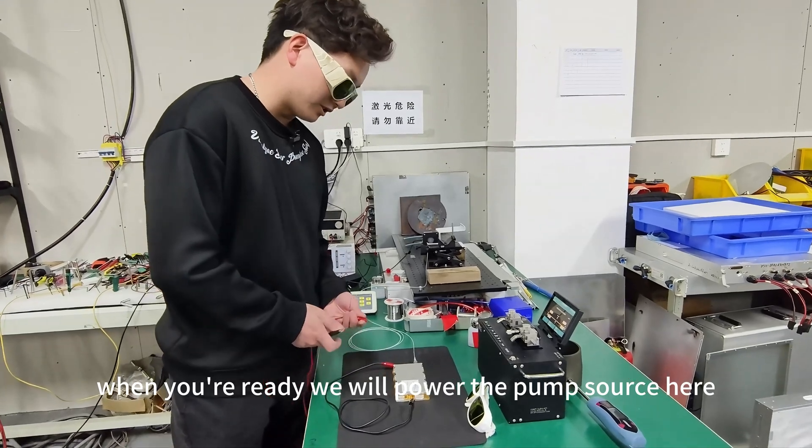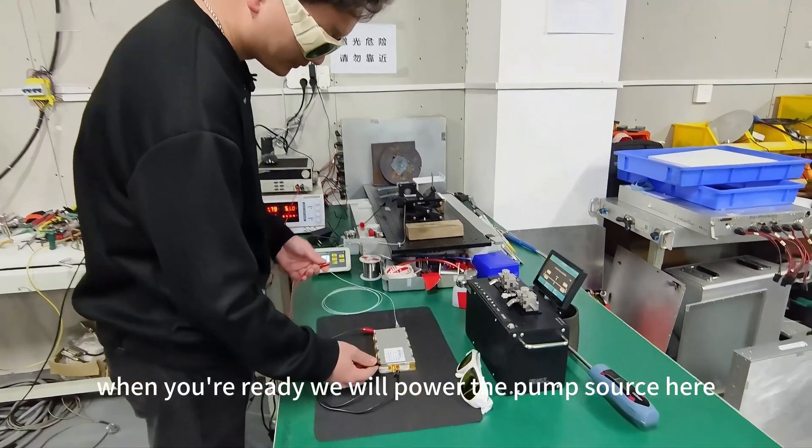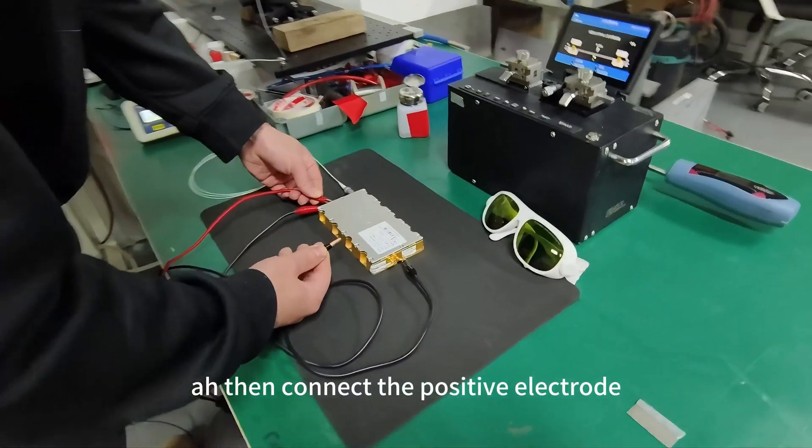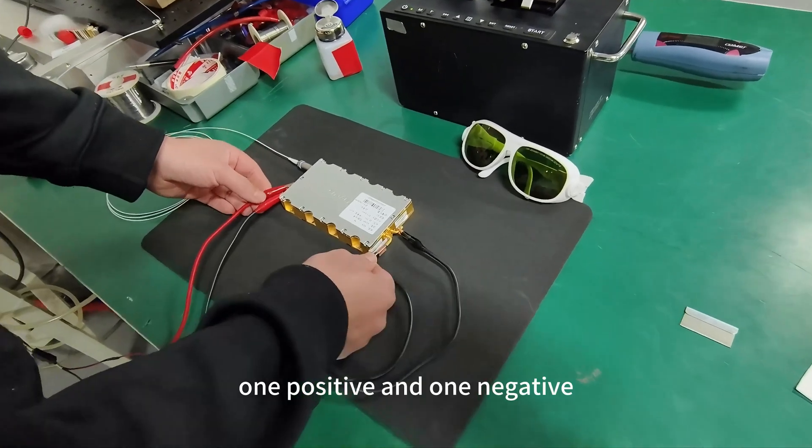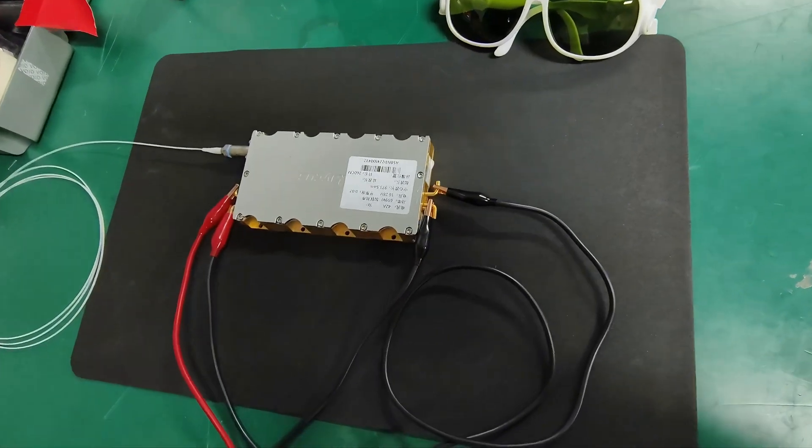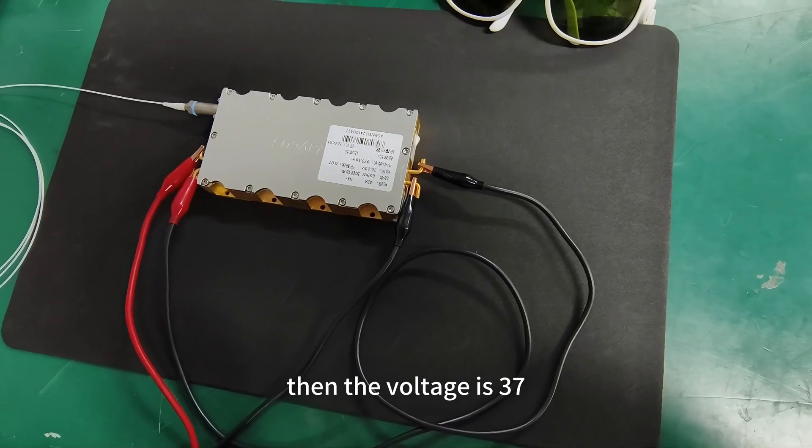When you're ready we will power the pump source here then connect the positive electrode, one positive and one negative. Then the voltage is 37.